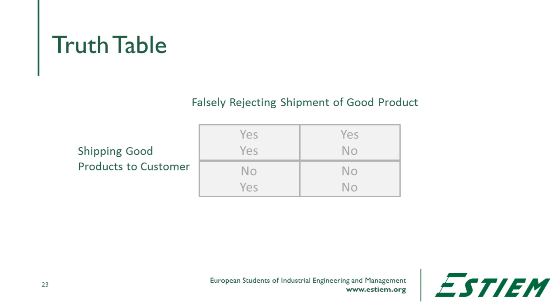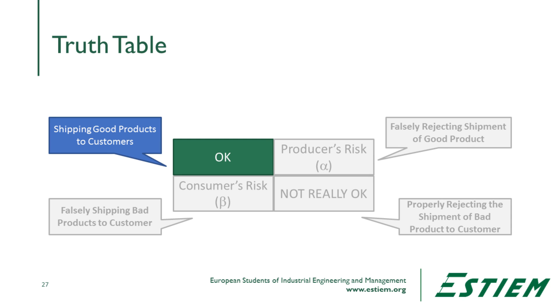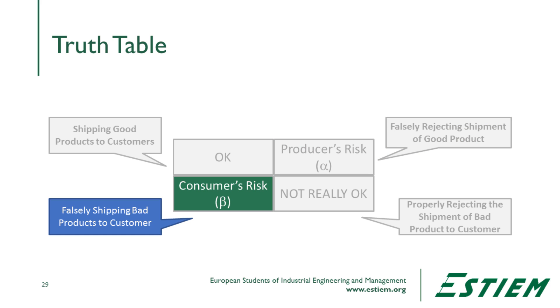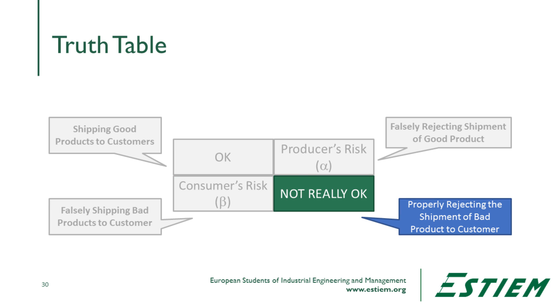How we detect differences is often shown as a truth table — a two-by-two matrix. Are we properly shipping good products to customers, or are we falsely rejecting them? If we're not shipping good products — falsely rejecting them — that's called alpha risk, which is the producer's risk. Beta risk is when we ship bad products to customers — that's the risk the consumer bears. If we don't ship bad products, statisticians say that's okay, but in reality it's not, because we have produced waste.